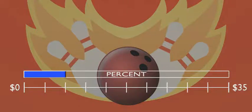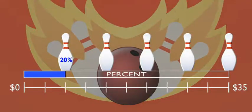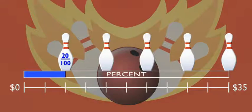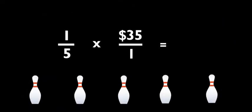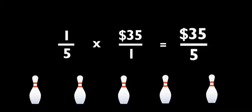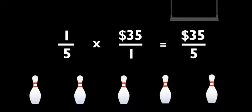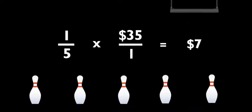In fact, that's our next step — to write the percent as a fraction. 20% is the same as 20 hundredths, or 20 over 100. Hey, we can simplify that — by dividing the numerator and denominator by 20. One-fifth. Now we can figure out how much 20% is. We multiply the original price by one-fifth. That's thirty-five-fifths.